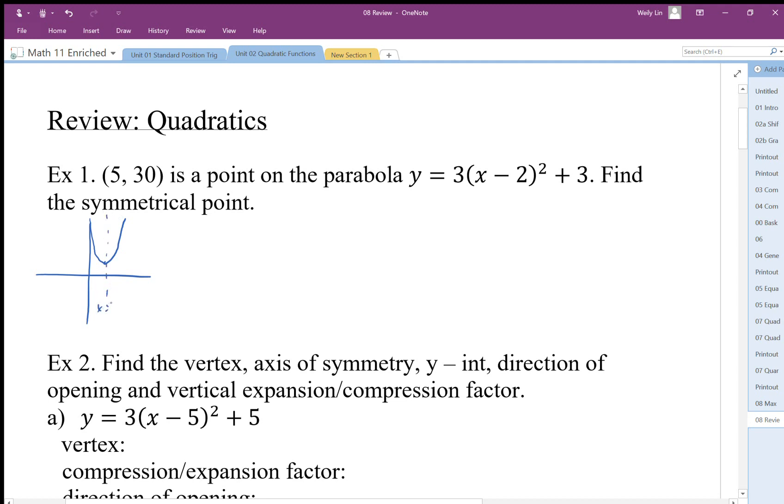The middle is very important. So (5,30), we have a point here, and we're being asked to find some symmetrical point over here. This is going to be (x,30), so we're basically trying to find x. Since we have the symmetry, we should use that property.